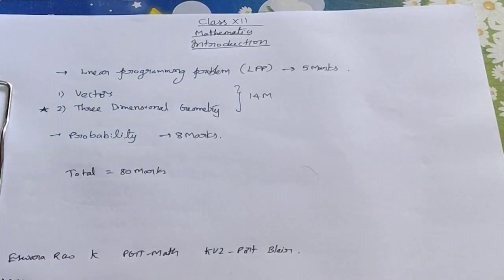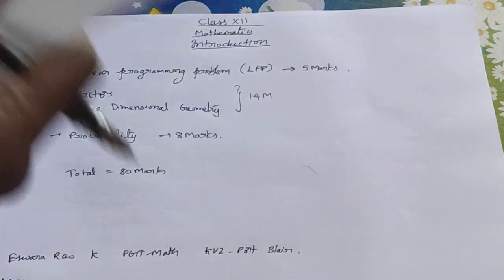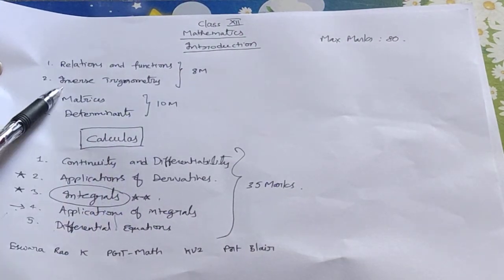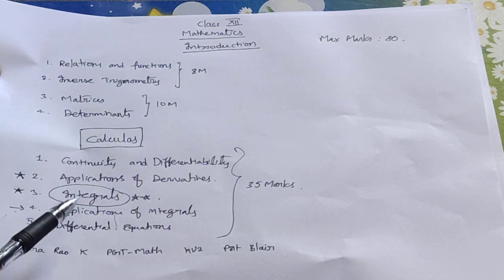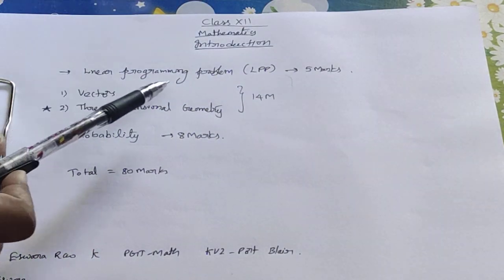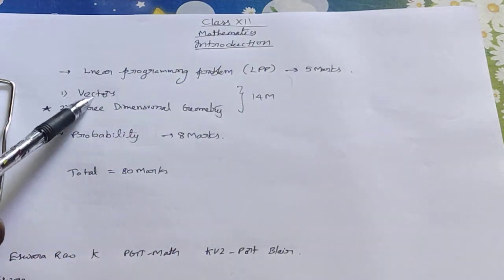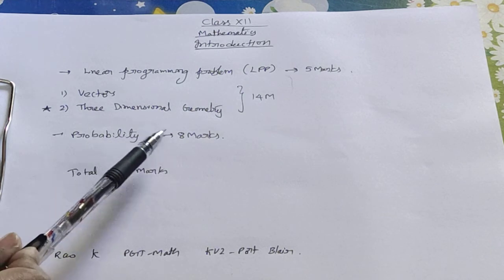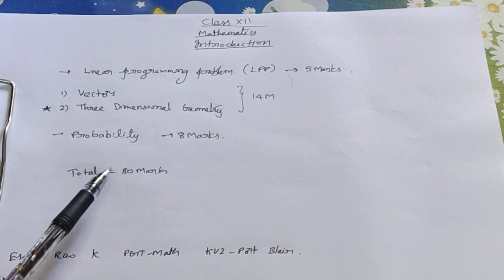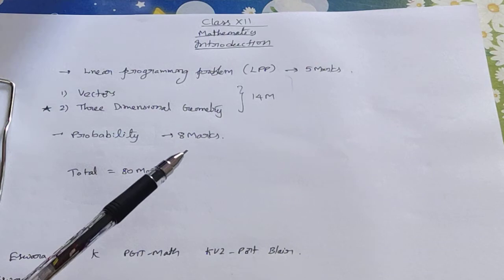To summarize the marks distribution: Relations and Functions — 8 marks; Matrices and Determinants — 10 marks; Calculus altogether — 35 marks; Linear Programming Problem — 5 marks; Vectors and 3D Geometry — 14 marks; Probability — 8 marks. Total: 80 marks.